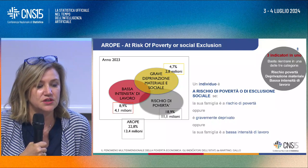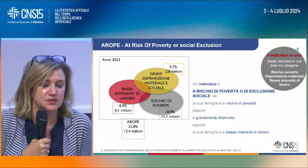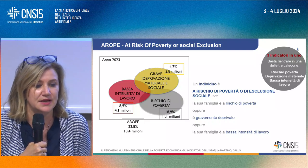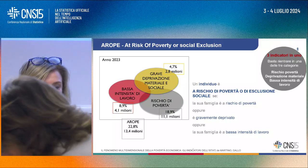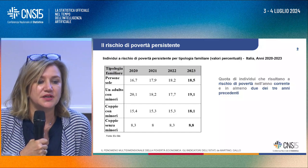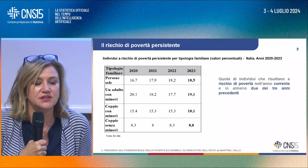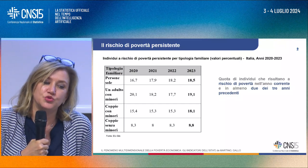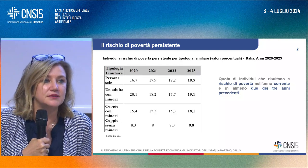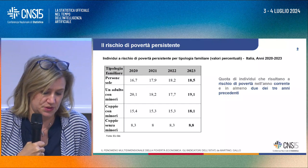Nel 2023 l'indicatore AROPE riguarda 13,4 milioni di individui. Considerando i singoli indicatori: il rischio di povertà conta 11,1 milioni, la grave deprivazione 2,8 milioni e la bassa intensità di lavoro 4,1 milioni. Il rischio di povertà si può calcolare anche in maniera persistente: la quota di individui a rischio di povertà nell'anno corrente e in almeno due dei tre anni precedenti. La tipologia familiare con valori più elevati per questo indicatore è un adulto con minori.